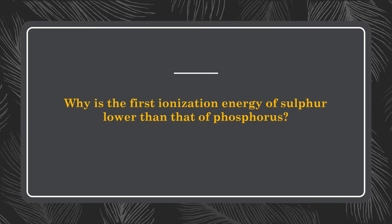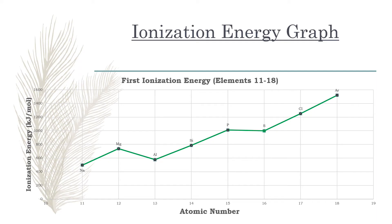Why is the first ionization energy of sulfur lower than that of phosphorus? The normal trend of the first ionization energy is that they increase across the period from sodium to argon. However, the first ionization energy of sulfur seems to be lower than phosphorus.